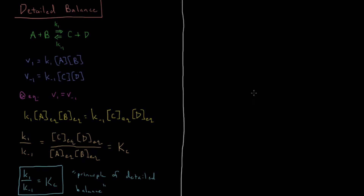Let's look at this in some more detail with a particular two-step mechanism. The one I like to use here is: R going to I going to P — reactant going to intermediate going to product. These are each elementary steps. You have K1, K-1 for the first step, and K2, K-2 for the second step.